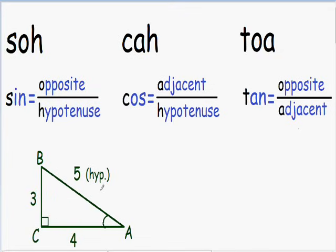Now I'm going to label the opposite side. The opposite side is always opposite the angle that we're trying to find. Since we're trying to find the trig functions for angle A, I'm going to go to angle A and draw an arrow to the opposite side. Our side with a length of 3 is going to be the opposite of angle A, so I'm going to label side 3 with OPP.